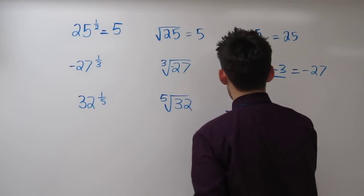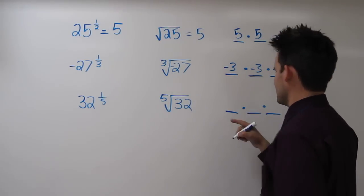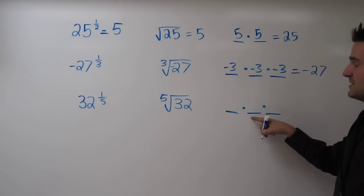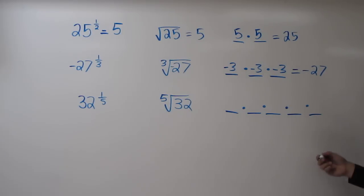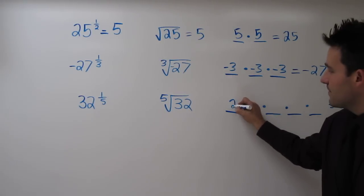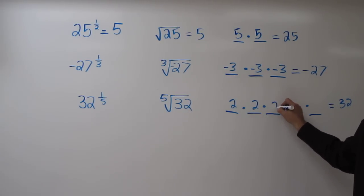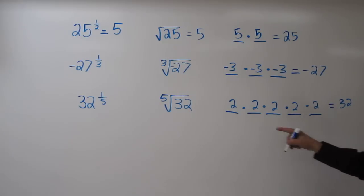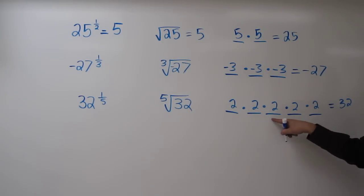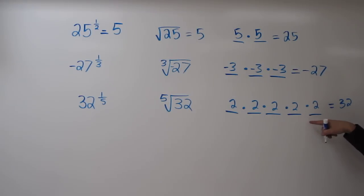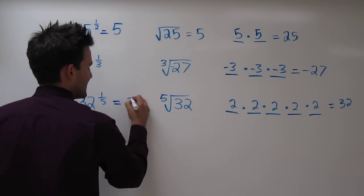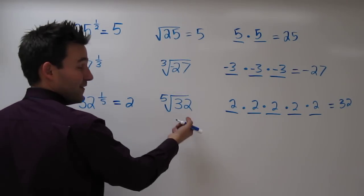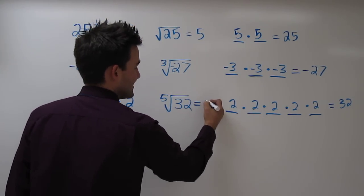So what times itself, times itself, times itself again, times itself one more time equals 32? It turns out 2 times 2 times 2 times 2 times 2: that's 4, 8, 16, 32. So yes, 32 to the 1 fifth power is 2, and the 5th root of 32 is 2.